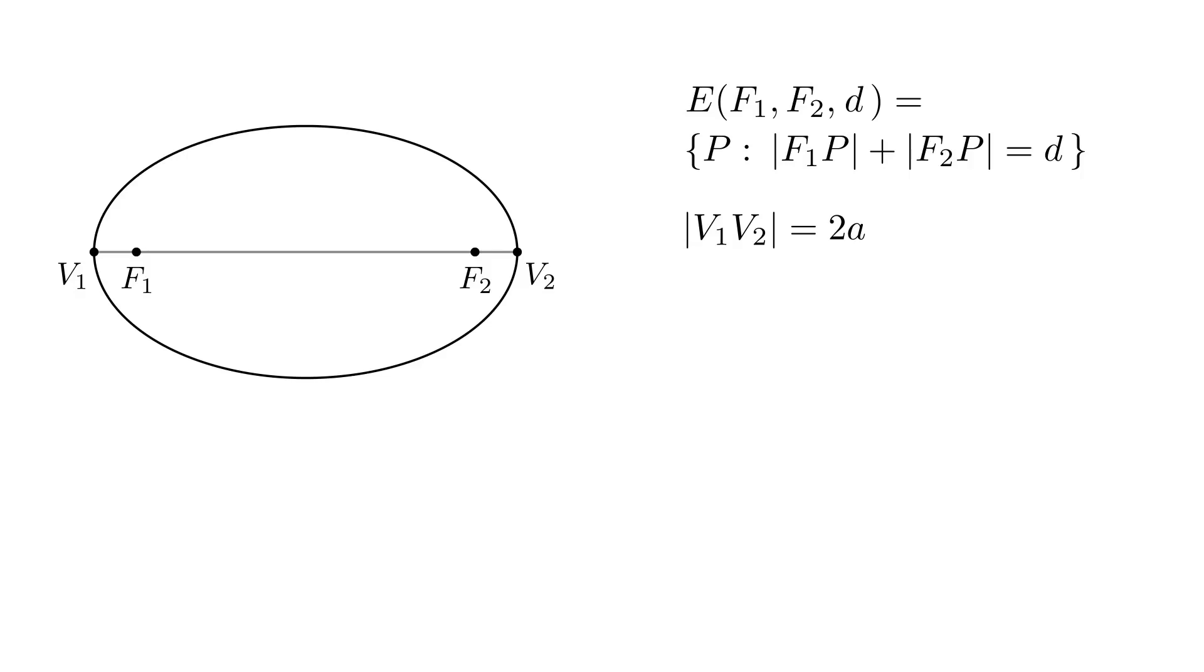Now, by the definition of an ellipse, for any point P on the ellipse, F1P plus F2P equals d. And in particular, that is true when P coincides with vertices V1 and V2. Let's say first that P coincides with V2. Now, F1P is the same as F1V2 and F2P is the same as F2V2, so by the definition, F1V2 plus F2V2 equals d.